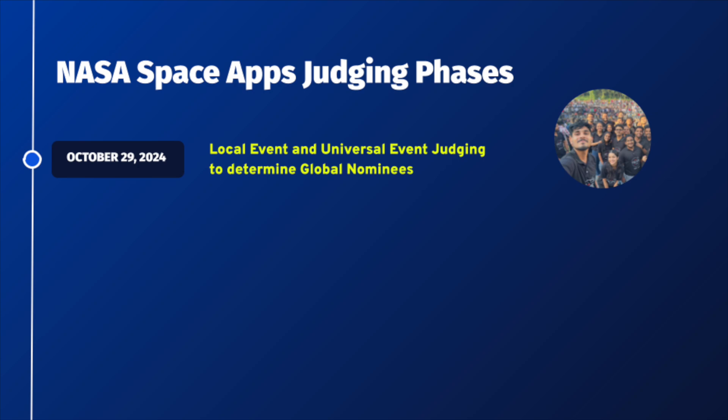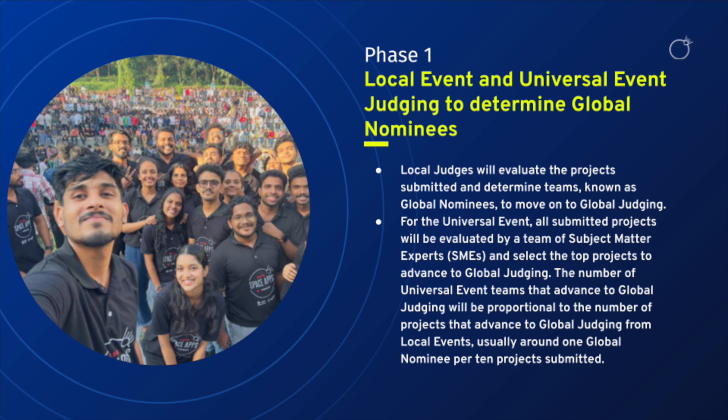Phase one is local event judging and determining the global nominees, as well as universal event judging. Following the hackathon, all projects will be submitted and evaluated by a panel of local judges at each local event. These judges will evaluate the projects submitted and determine which teams will advance to become global nominees. Local leads and local judges may also award local prizes.